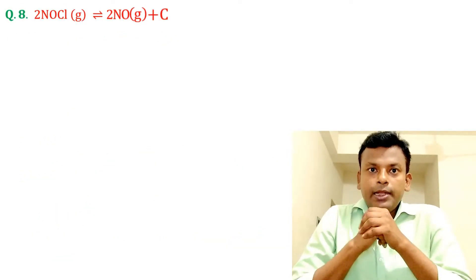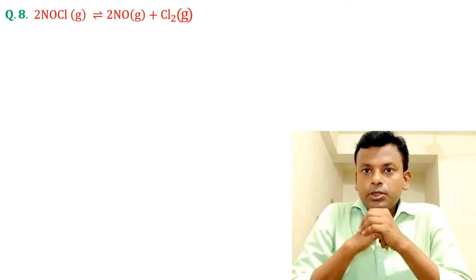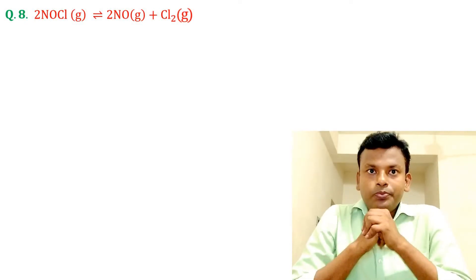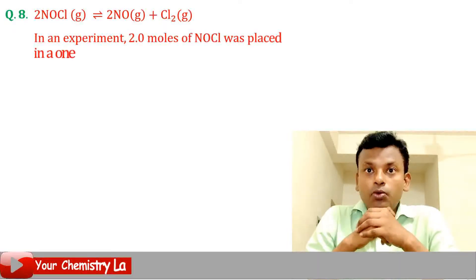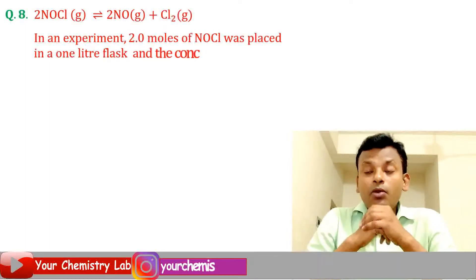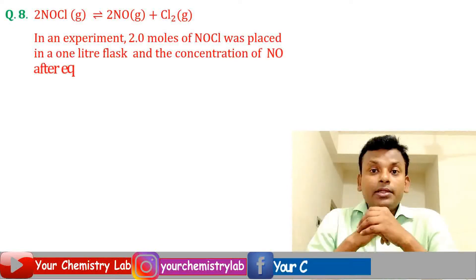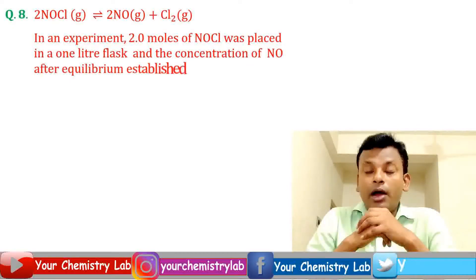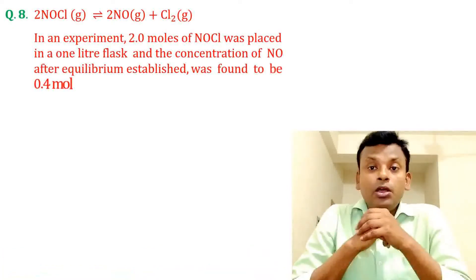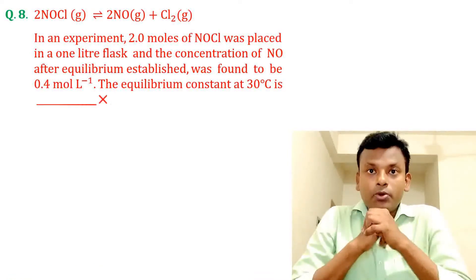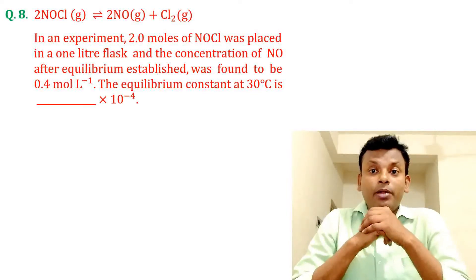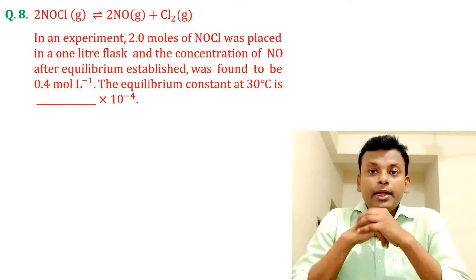Question eight: 2NOCl gives 2NO plus Cl2. In an experiment, 2.0 moles of NOCl was placed in a 1-liter flask and the concentration of NO after equilibrium was established was found to be 0.4 mol/L. The equilibrium constant at 30°C is blank times 10 to the power minus 4. This question was set in JEE Main 27th June 2022 morning shift.